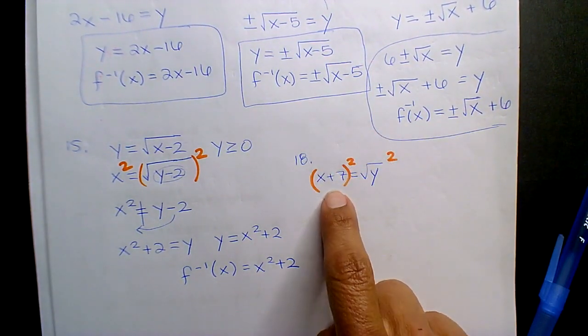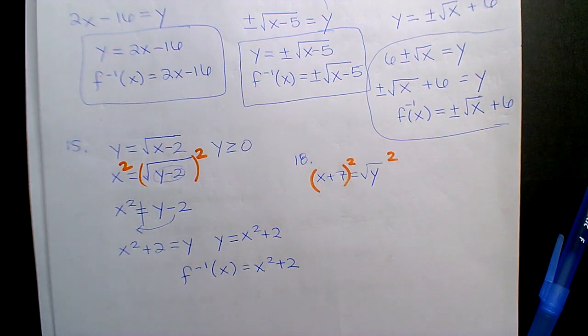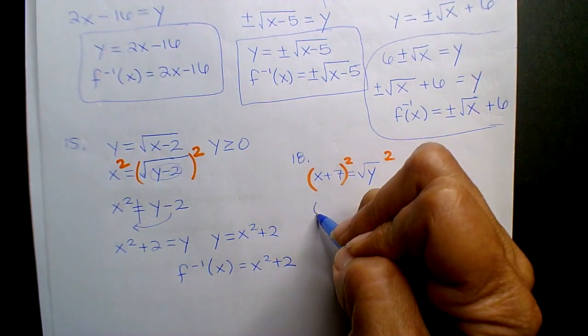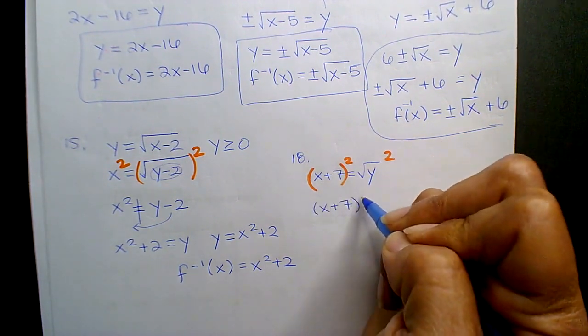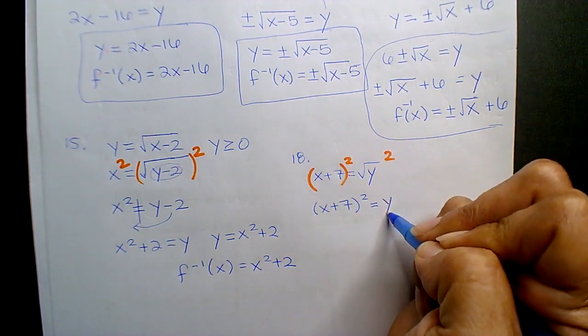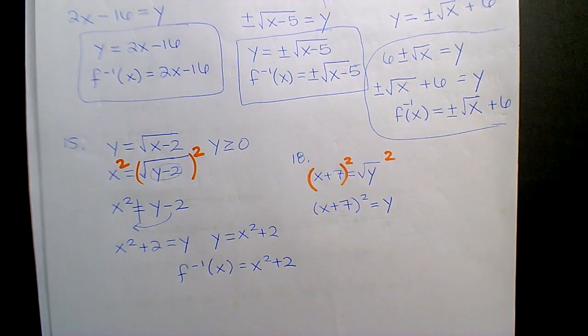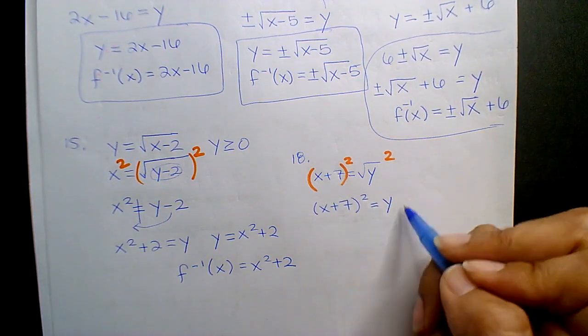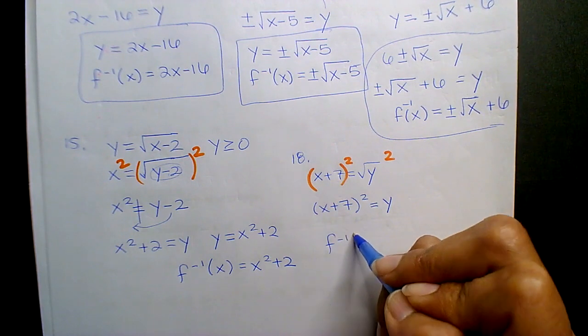Just for those of you that want to jump ahead, do not expand this out, you know, foil or expand using that repetitive distributive property. Don't do that. Just leave it as X plus 7 squared equals Y. Just leave it as that and that would be your inverse function.